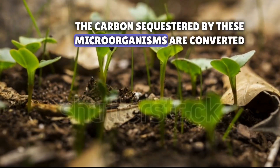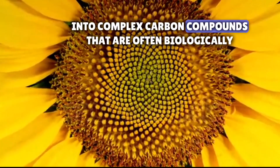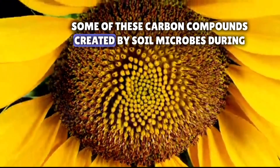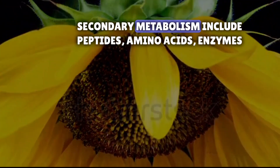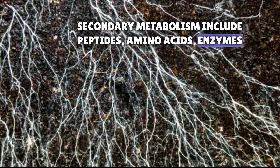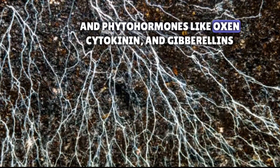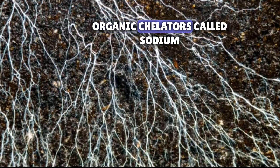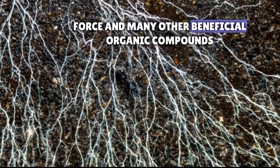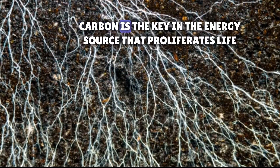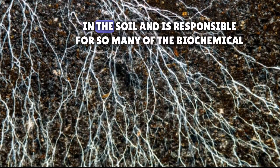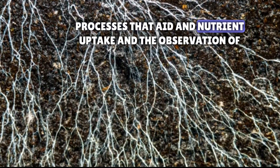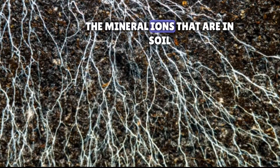The carbon sequestered by these microorganisms is converted into complex carbon compounds that are often biologically available at the plant root. Some of these carbon compounds created by soil microbes during secondary metabolism include peptides, amino acids, enzymes, and phytohormones like auxin, cytokinin, and gibberellins. They also synthesize plant-beneficial compounds like organic chelators called siderophores and many other beneficial organic compounds. Carbon is the key energy source that proliferates life in the soil and is responsible for so many of the biochemical processes that aid in nutrient uptake and the absorption of the mineral ions that are in soil.